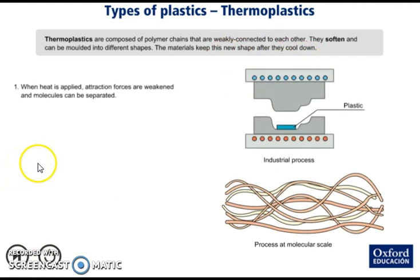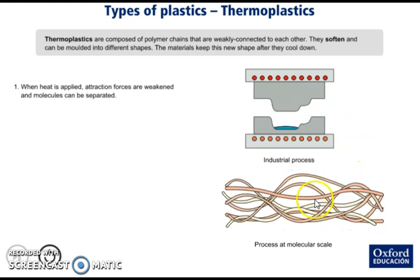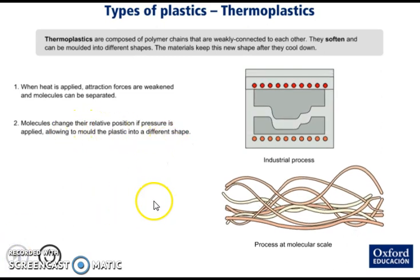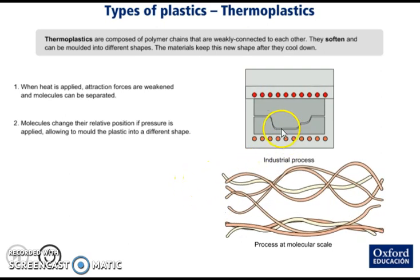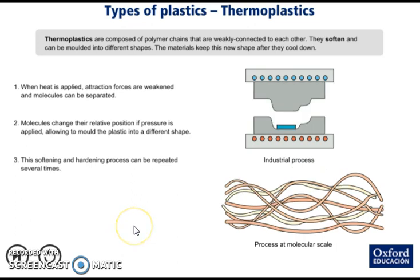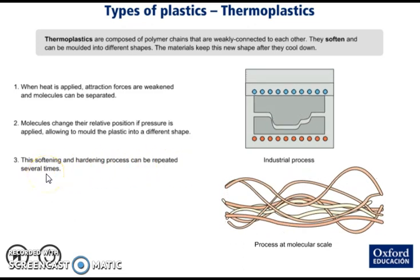Let's see the process. When heat is applied, the attraction forces are weakened and molecules can be separated. We apply heat and the forces are weakened. Molecules change their relative position when pressure is applied, so the mold gives its shape to the plastic. What is really important about this type of plastic is that this softening and hardening process can be repeated several times.